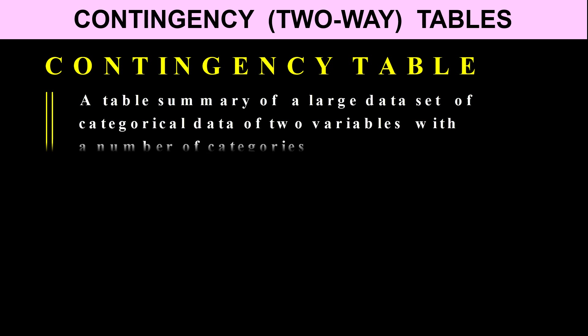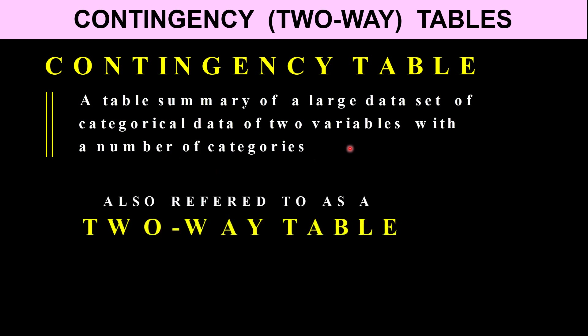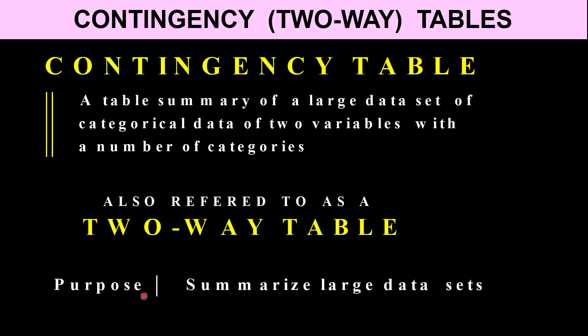We're going to look at another way in which sample spaces can be represented, and this is known as a contingency table. A contingency table is a table summary — a summary in table form — of a large data set of categorical data of two variables with a number of categories. So it's two-variable data, but each of the variables has subcategories. The main purpose is that if you have large data sets, you can summarize the data in a contingency table.